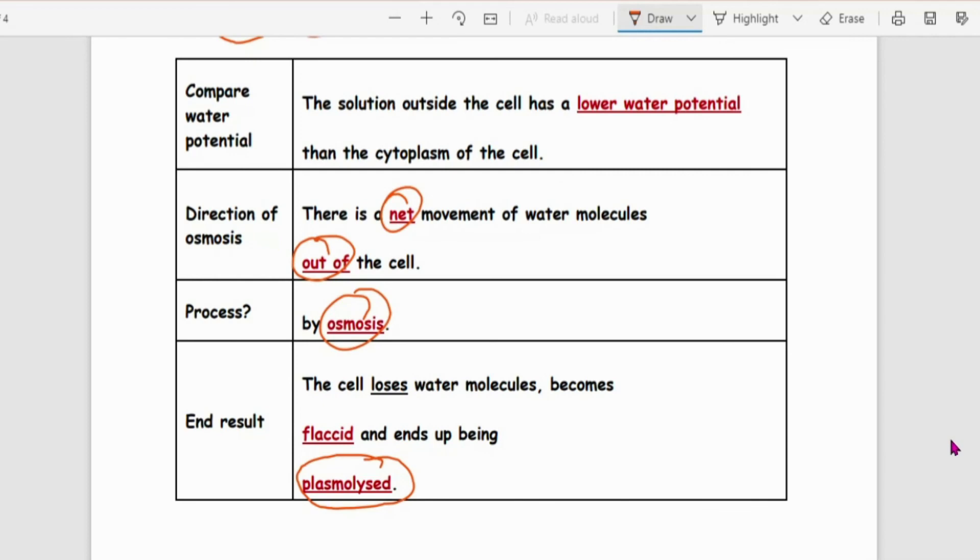And because it is no longer turgid, Flaccid is actually the opposite of turgid. So it's no longer turgid, it's now flaccid. Means flabby flabby. It ends up being Plasmolyzed. So that's for this worksheet sakes.